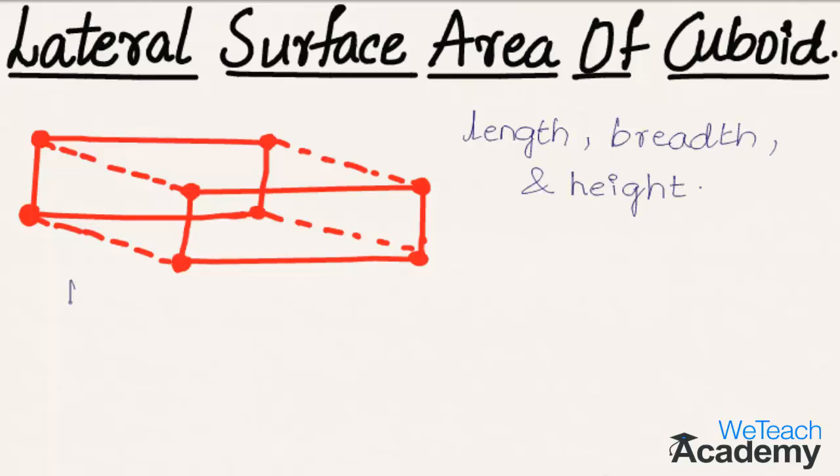Coming to the lateral surface area of cuboid, we already know that lateral surface area of a right prism is given by the formula: perimeter of the base into its height.